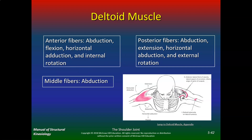Here's the deltoid muscle. Anterior fibers do abduction, flexion, horizontal adduction, and internal rotation. Posterior fibers do abduction, extension, horizontal abduction, and external rotation. The middle fibers do abduction. Since this isn't an anatomy class, don't worry too much about origin and insertion — I want all focus to be on movement, so really understand the movement of each muscle and how they work together.